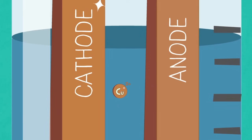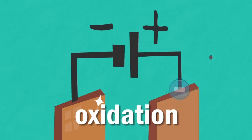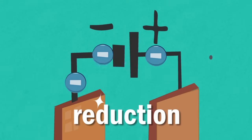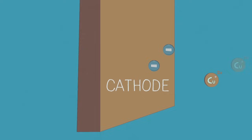It's the copper 2 plus ions that will move between the anode and the cathode allowing oxidation and reduction to occur. At the cathode, copper 2 ions are deposited as copper as shown in the equation.